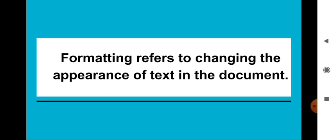First we need to know about what formatting is. Formatting refers to changing the appearance of text in the document — the way text appears on the screen. This includes changing the font style, font color, font size, and font name. The overall appearance of text in our document is called formatting.